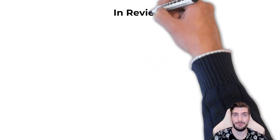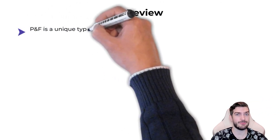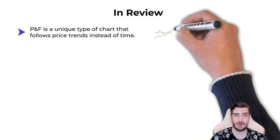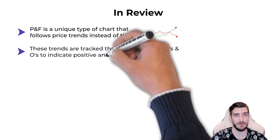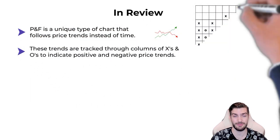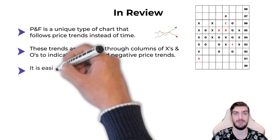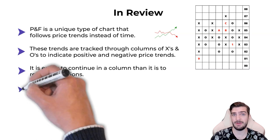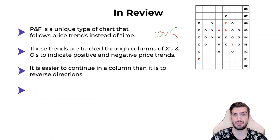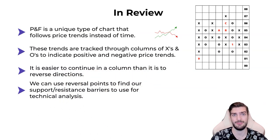Let's quickly review everything we've learned. Point and figure is a type of stock chart that follows price trends instead of time. These trends are tracked using columns of X's for positive price trends and O's for negative price trends. It is easier to continue in the current trend than to flip into the opposite, and understanding where trends start and end gives us a valuable way to do technical analysis and build trading strategies.